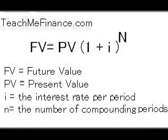Here's the equation for figuring future value: future value equals present value times (1 + i) to the power of N, where i is the interest rate per period and N is the number of compounding periods.